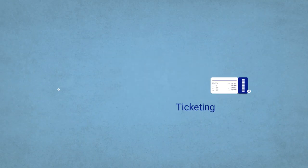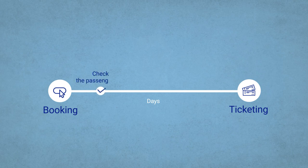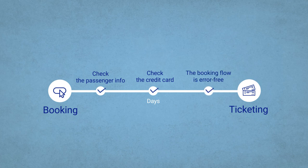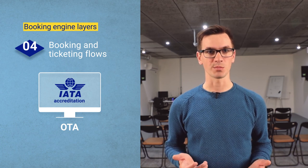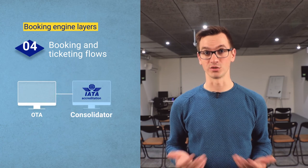But booking isn't ticketing yet. Ticketing is issuing a confirmation that the seat was paid for and belongs to a particular traveler. In the era of electronic tickets, all passenger and flight data is kept in the airline's passenger service system, while a document that a traveler receives is merely a receipt — it seals the whole deal. Usually, ticketing happens sometime after the booking. This time gap is needed to check if the passenger information is valid, the credit card is fine, and there weren't any other problems in the booking flow. OTAs can issue a ticket if they have an IATA accreditation, which is expensive. To bypass this accreditation headache, some OTAs partner with consolidators or other IATA agencies to do ticketing for them.